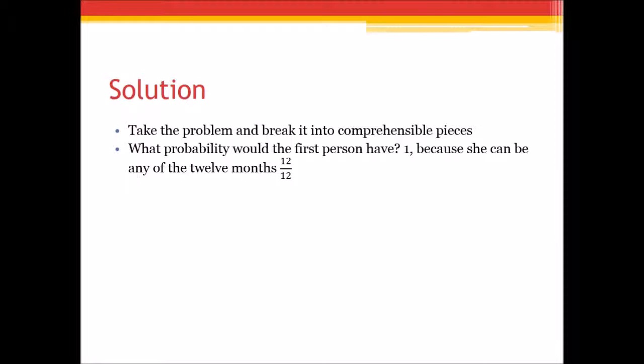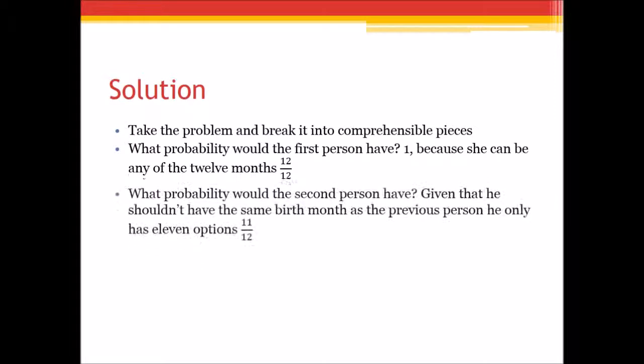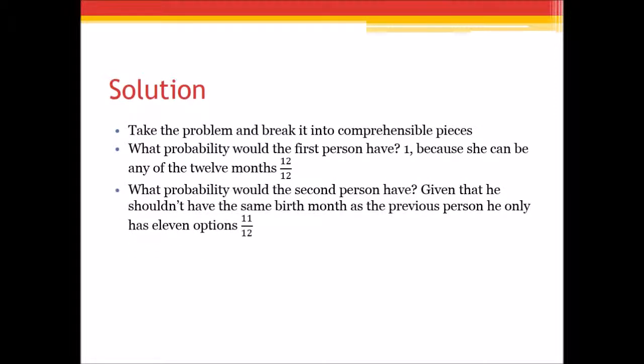Now remember we're saying where no two people have the same birth month. So what would person two have? Given that person one could be any birth month, then person two only has 11 options left since person one took up one of those options. So you kind of see the pattern here.